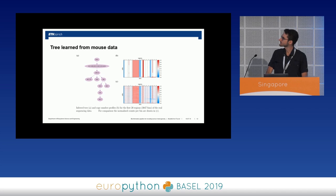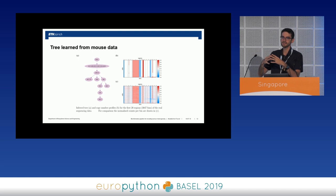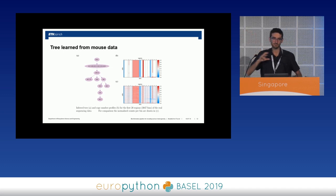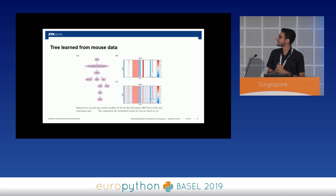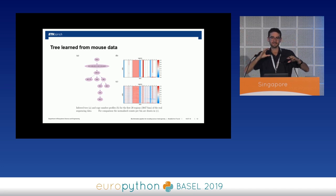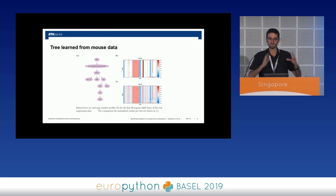This is a tree we learned from real data — data from a mouse brain tumor. We again started with a random tree, and after millions of iterations, this tree turned out to be the one explaining the mouse brain tumor evolution best. On the right hand side and below is the original data matrix we obtained after the sequencing experiment, and the figure above shows how we can reconstruct it from the evolutionary tree we learned.